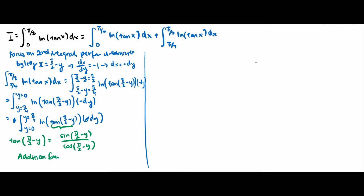The addition formula tells us that sine(alpha minus beta) is equivalent to sine(alpha)cosine(beta) minus cosine(alpha)sine(beta), while cosine(alpha minus beta) is equivalent to cosine(alpha)cosine(beta) plus sine(alpha)sine(beta).